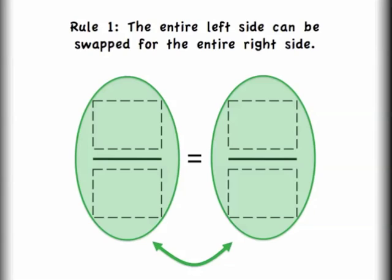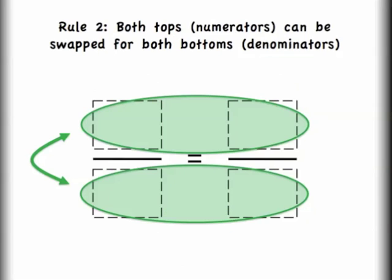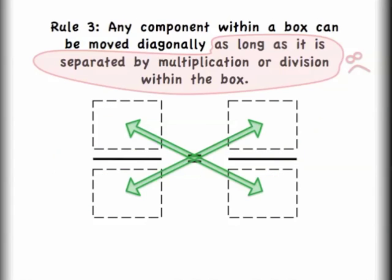The first rule is that we can swap the left and the right side of the equation. The second rule is that I can take both tops — that's the numerators — and swap those for both of the bottoms, that is the denominators. So I'm just going to flip both sides of the equation. The third rule says that any component within the box can be moved diagonally as long as it is separated by multiplication or division within the box. I'll admit the part highlighted in red sounds a little bit strange, and I'm going to revisit it with an example.